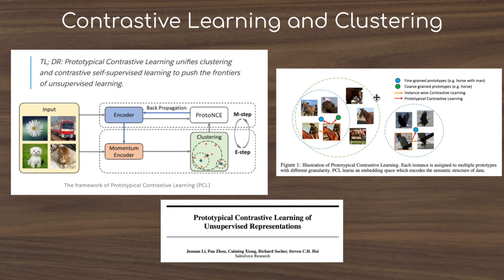Another detail of the PCL algorithm is its multi-granularity clustering — a coarse-grain cluster covering broad categories like animals versus vehicles, and then fine-grain clusters like horses, cats, and dogs within the animal cluster. This makes it a bit more nuanced and complex. The optimal transport component of SwAV is somewhat confusing, but overall SwAV is simpler than PCL.